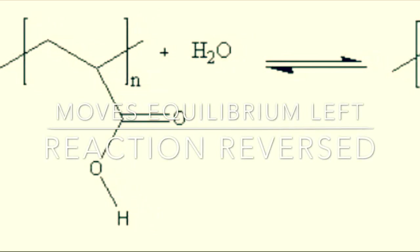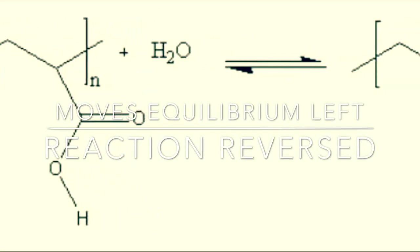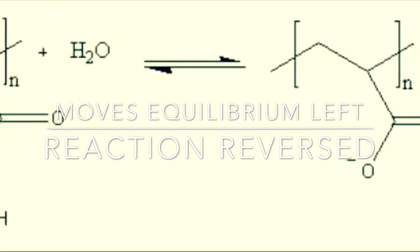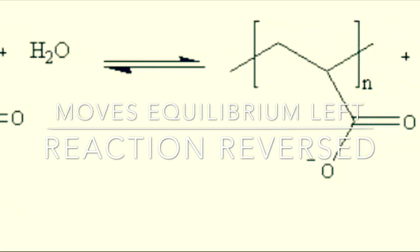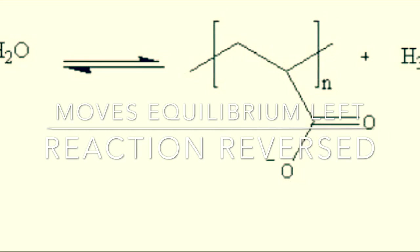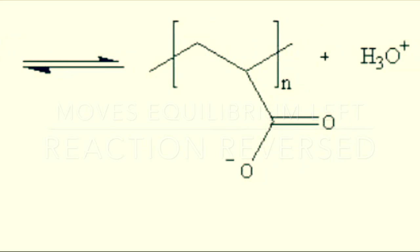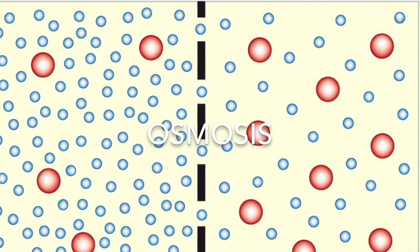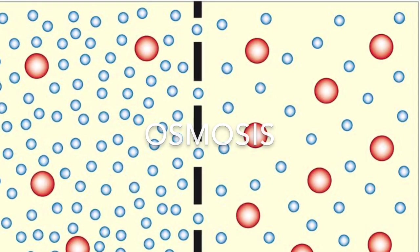This moves the chemical equilibrium to the left, as the polymer's charges get neutralized. Thus, the chain begins to collapse in on itself, as the water is drawn out of it, and the reaction is reversed. This complex chemical process is called osmosis, and it can be done simply by adding table salt to the solution.